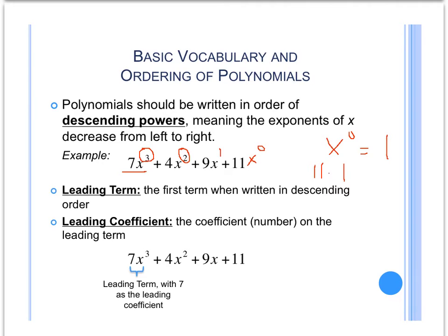The leading term of a polynomial means that when a polynomial is written in descending order, the leading term is the very first term in the polynomial. In that example, 7x to the third would be the leading term. The leading coefficient means the coefficient or the number that is on the leading term. Make sure you write it in descending order. In that example, the leading term is 7x to the third. So the coefficient on that is 7.